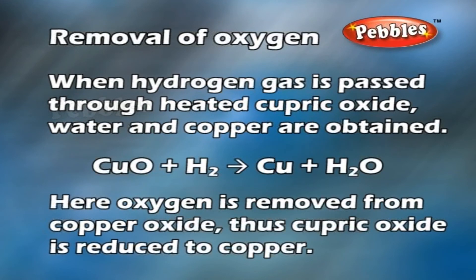Removal of oxygen: when hydrogen gas is passed through heated cupric oxide, water and copper are obtained. Here, oxygen is removed from copper oxide, thus cupric oxide is reduced to copper.